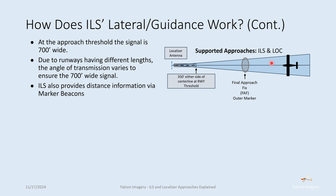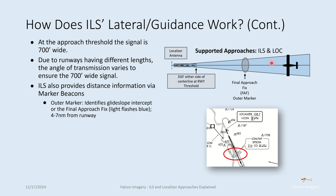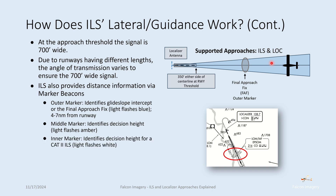The ILS also provides distance information via marker beacons. The outer marker beacon identifies where the glide slope intercept is — the final approach fix — and is usually located four to seven nautical miles from the runway. The middle marker identifies the decision height, with lights flashing amber. Finally, the inner marker identifies decision height for a CAT II ILS, with lights flashing white, usually right next to the radio itself.